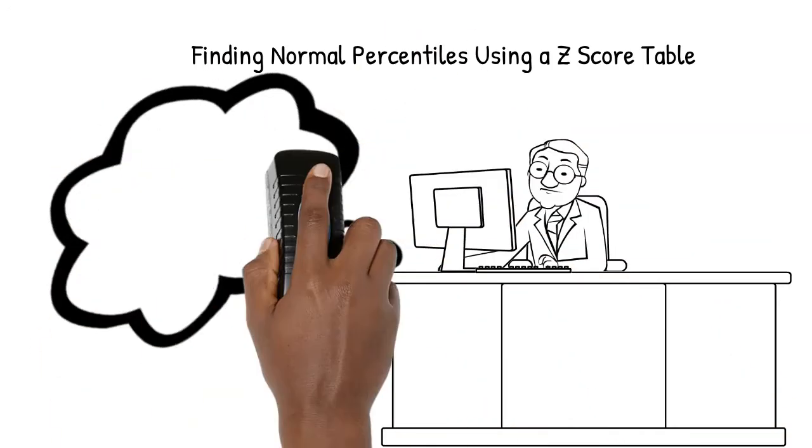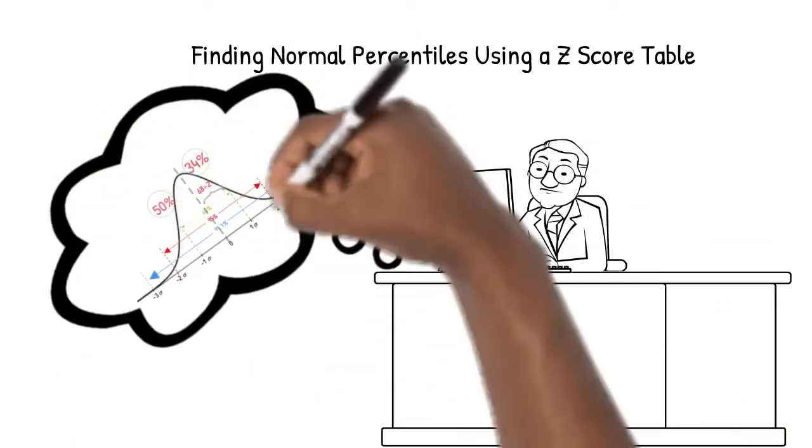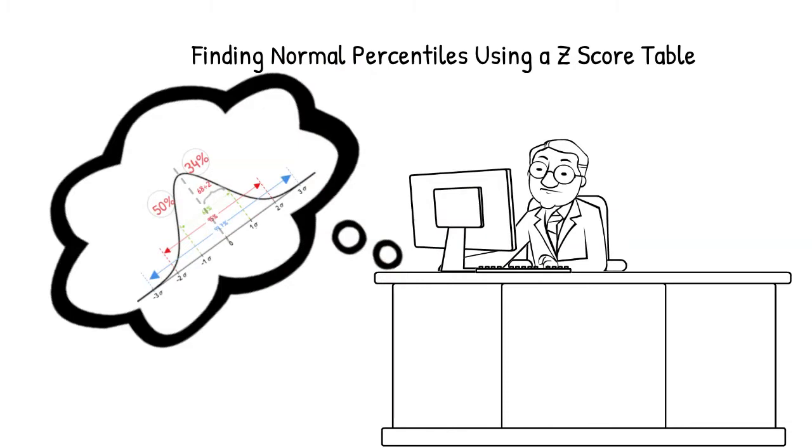In a previous video, we learned to find percentiles using the 68, 95, 99.7 rule and the normal curve.